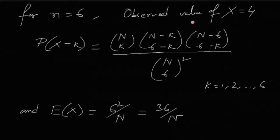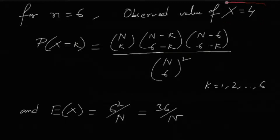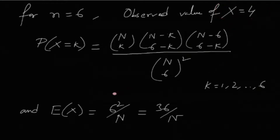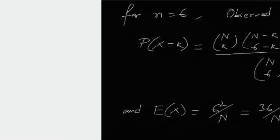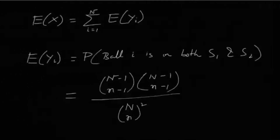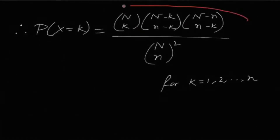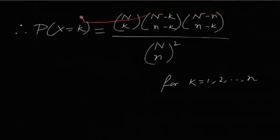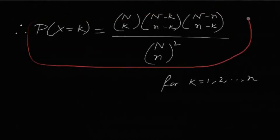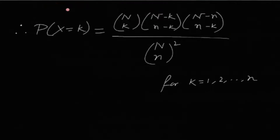The observed value of X is 4. By the method of moments, we equate the population moment with the sample moment. Here only one sample has been taken, so the sample mean is just 4, and the population mean is E[X]. Calculating E[X] directly from the PMF might be cumbersome, so we try a different approach using indicator variables.